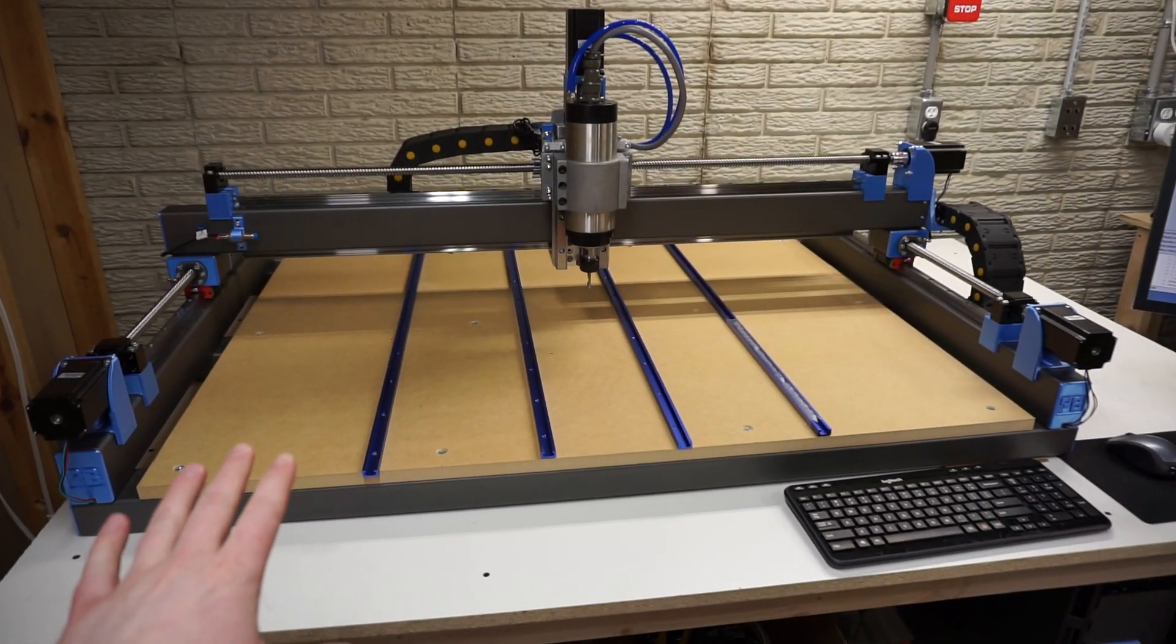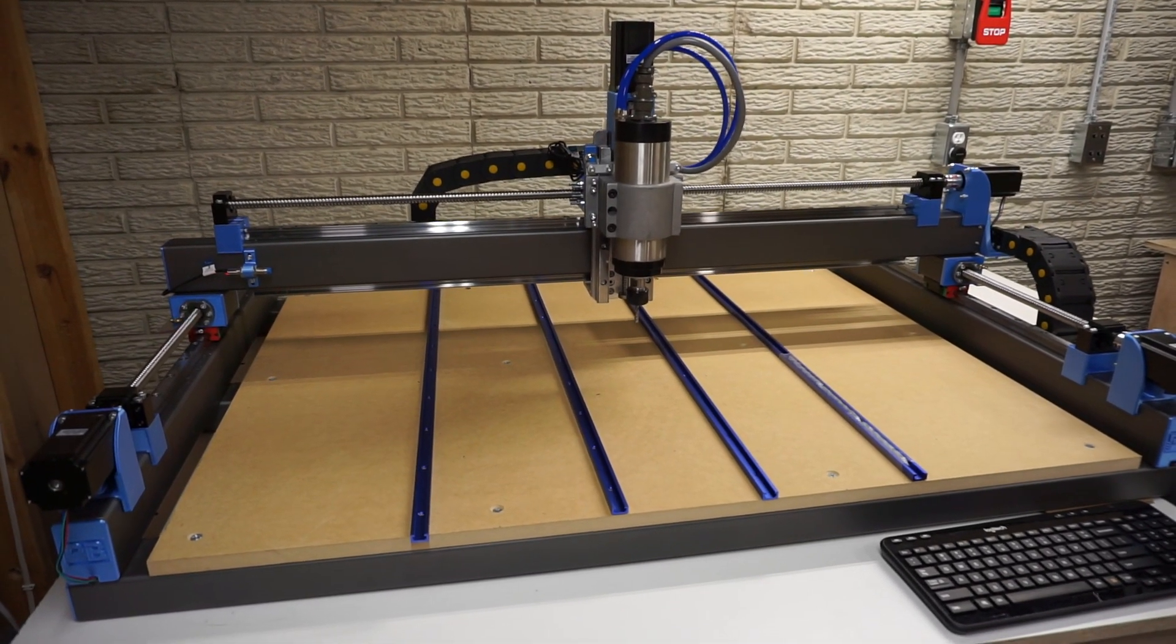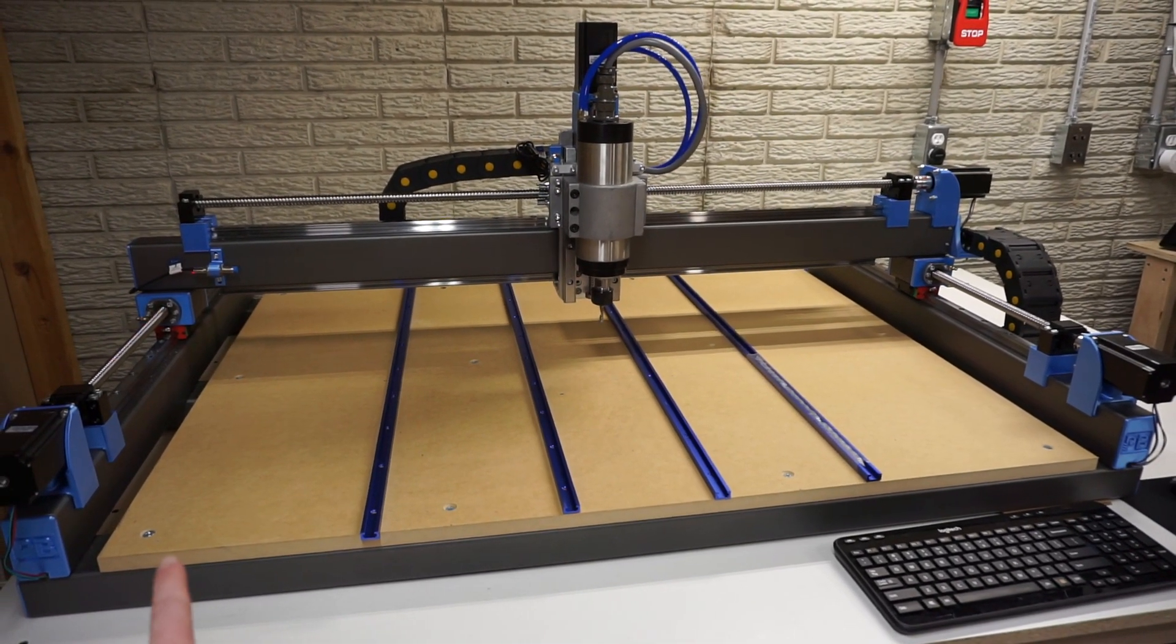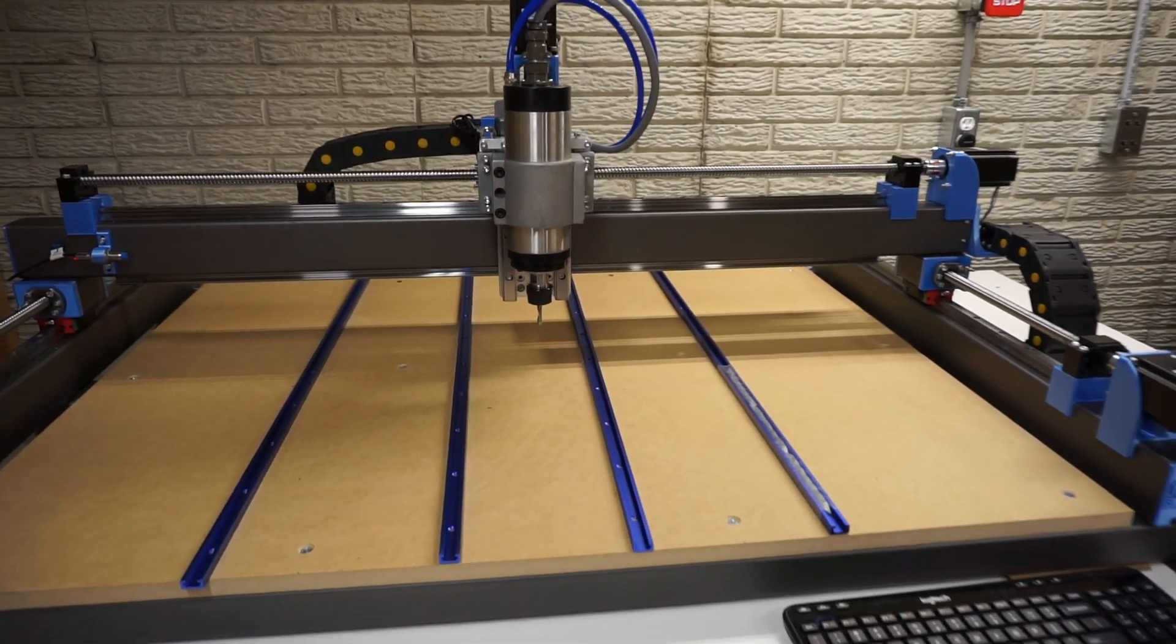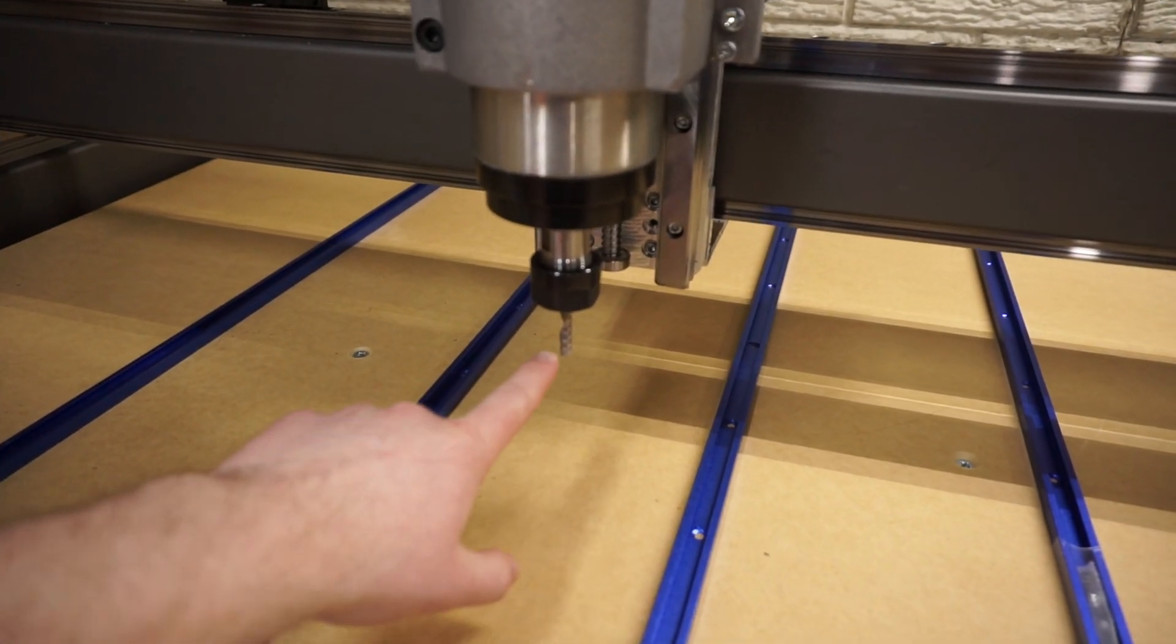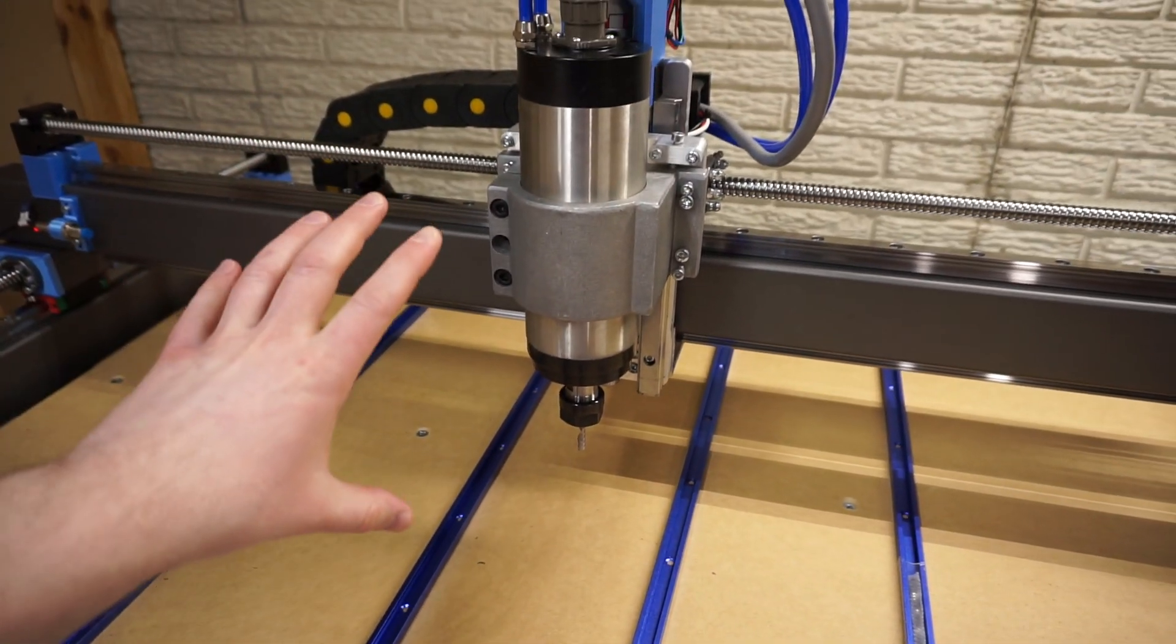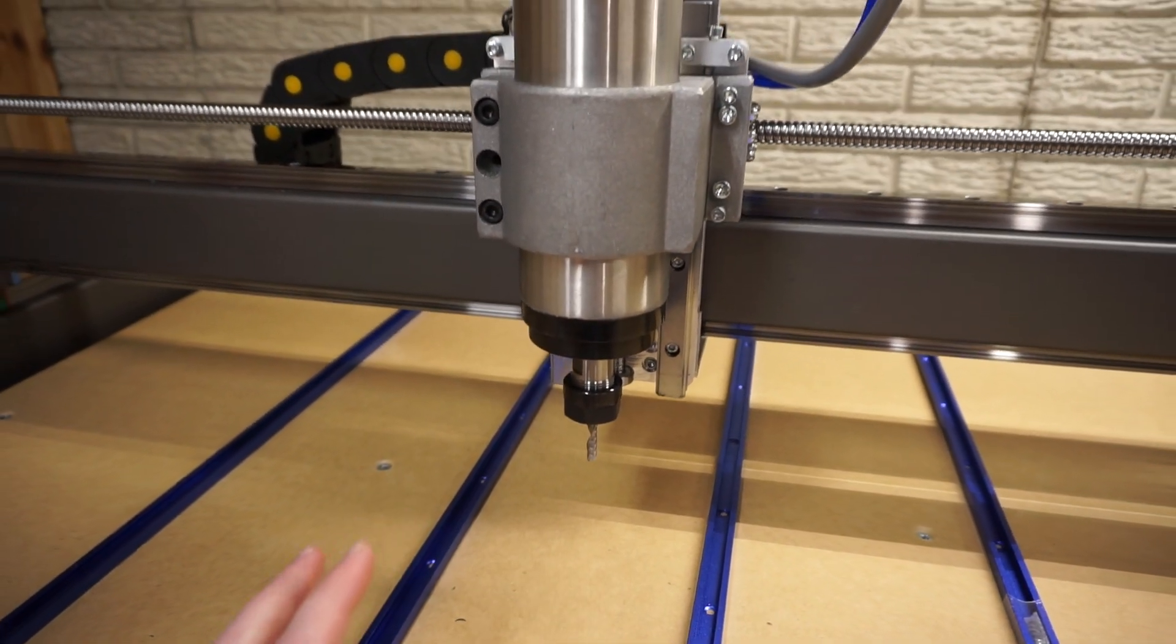Right off the bat we'll talk about the dimensions here. For anyone wondering, this is the stock size PrintNC and this has a cutting area of 36 on the X, 24 on the Y, and then I have four inches of Z height right now with this bit in here. You can obviously adjust that a little bit depending on where the spindle sits in the mount and what kind of bit you're using.